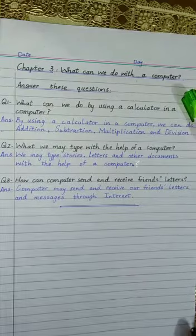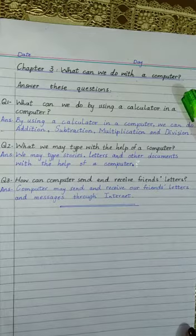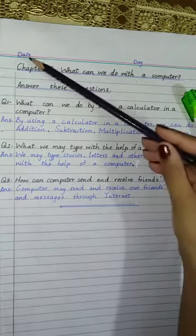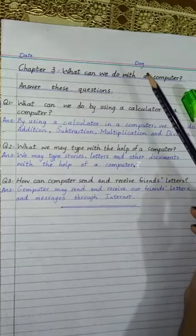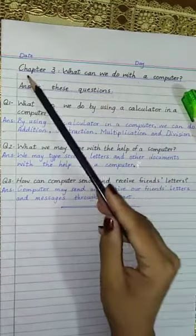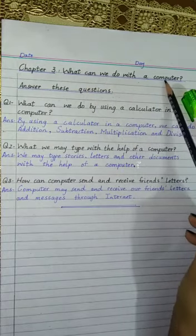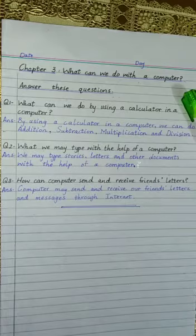Good morning class 2. Take out your computers copy. Today we will answer questions of Chapter 3: What can we do with a computer? Before starting your work, write today's date and day. After that, write 'Chapter 3: What can we do with a computer? Answer these questions.' Girls, you have to underline it with blue color.